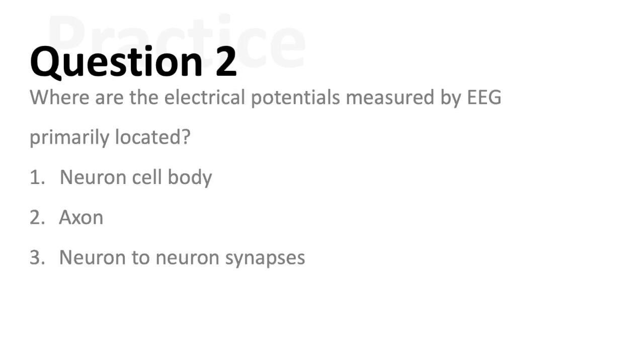Question two. Where are the electrical potentials measured by EEG primarily located? The neuron cell body, axons, neuron to neuron synapses? I'll give you three seconds. If you answered neuron to neuron synapses, you would be correct.